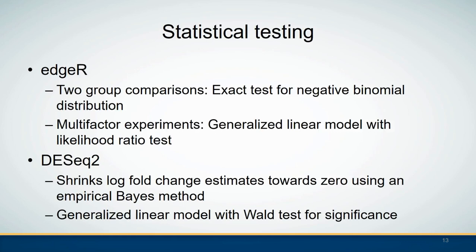Different software packages use different statistical tests to identify differentially expressed genes. In edgeR, for two-group comparisons an exact test for the negative binomial distribution is used, and for multiple group comparisons a generalized linear model with likelihood ratio test is applied. For DESeq2, the two-group comparison uses an empirical Bayes method to identify differentially expressed genes, and multiple group comparison uses a generalized linear model with likelihood ratio test for significance.